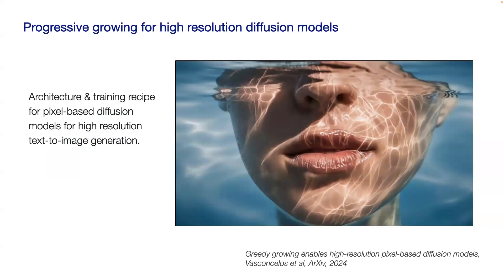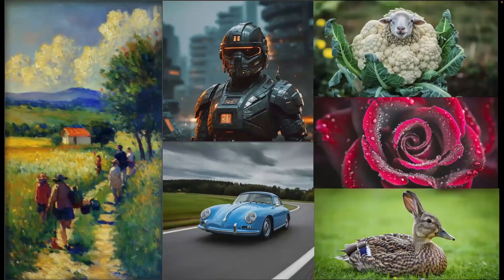One thing we're doing is getting rid of cascades. Cascades were a great tool for going from low-res to high-res, but ideally we'd learn in one stage a model that goes from a label or text prompt directly to a high-resolution image. We're now able to do that with a progressive growing architecture and training procedure that lets us train up to 1K or even 4K pixel-based diffusion models from a prompt without cascades whatsoever, producing really impressive images.